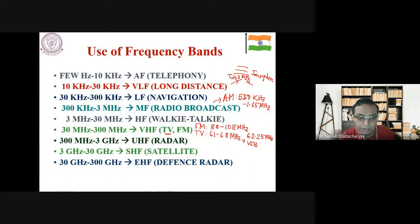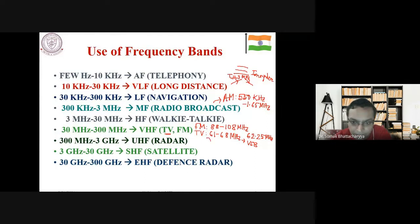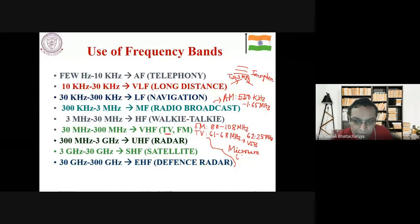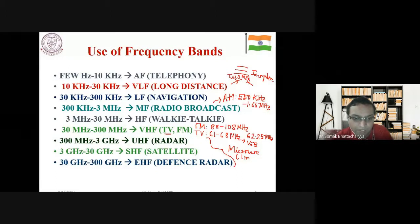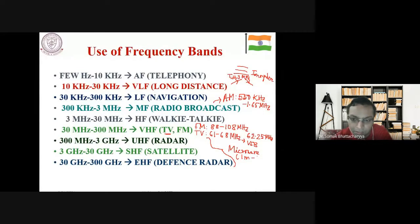After the microwave range, you have the optical range — infrared plus visible plus ultraviolet. For a basic communication system, you need a source, a transmitter for modulation, a transmission medium, a receiver for demodulation, and a destination. Key figures of merit include the signal-to-noise ratio (signal power to noise power) and noise figure (input SNR to output SNR).